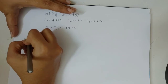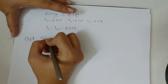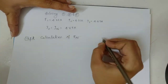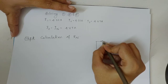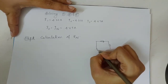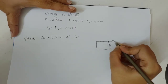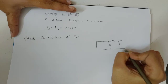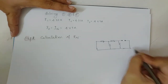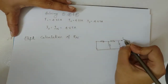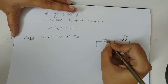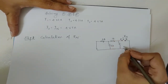Step 2 is the calculation of Rn. To find the Norton resistance, we short circuit the voltage sources and open circuit the current sources. Looking into the terminals A and B, we see resistances of 10, 10, and 30 ohms.